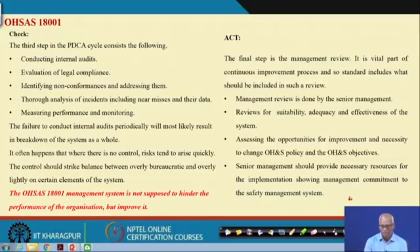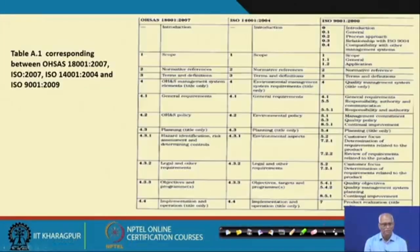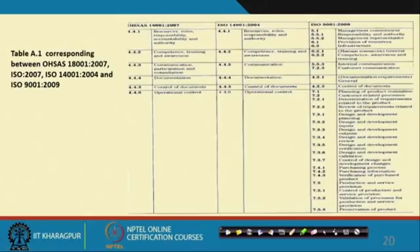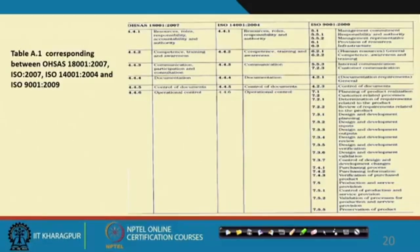The clauses of OHSAS 18001 include: scope, references, OHS policy, planning, hazard identification, legal and other requirements, objectives, resources, competence, training, communication, documentation, control of documents, and operational controls. All these things which we have talked about — your OHS should contain all these things based on PDCA.